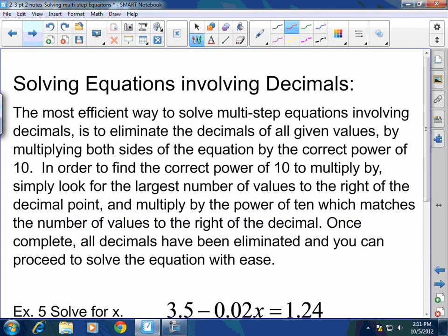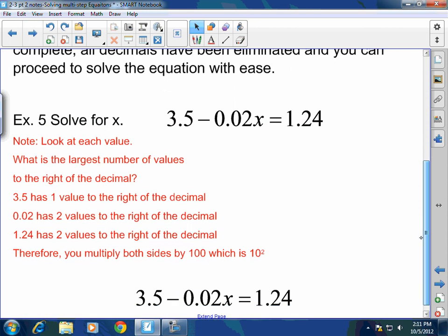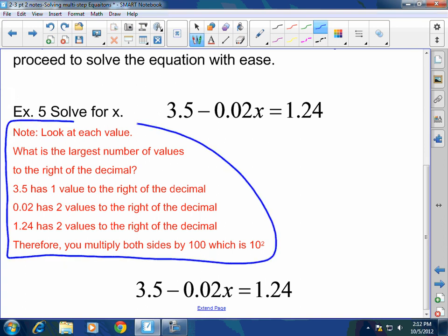Now, I've got a way for you to get rid of and eliminate decimals. Don't bother writing this down. We've only got like 10 minutes or so left. So you could write this down. You have to write it down or print it out at home. The most efficient way to solve multi-step equations involving decimals is to eliminate the decimal of all given values by multiplying both sides of the equation by the correct power of 10. In order to find the correct power of 10 to multiply by, simply look for the largest number of values to the right of the decimal point and multiply by the power of 10 which matches the number of values to the right of the decimal. Once complete, all decimals have been eliminated and you can proceed to solve the equation with ease. Let me explain how simple this is. All the other classes were really happy with this. Okay. Note. Please look at this in red. This guy right here. All right? Look at each value.